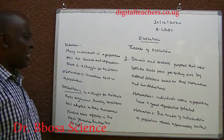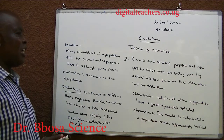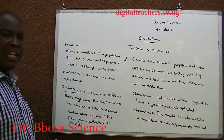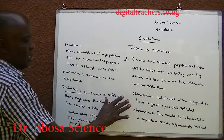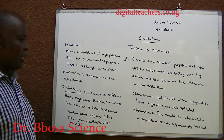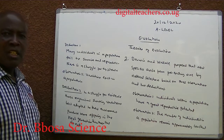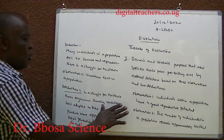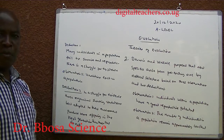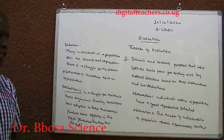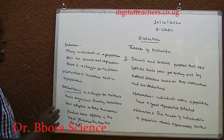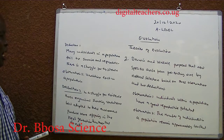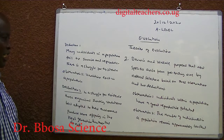Two, Darwin and Wallace proposed that new species arise from pre-existing ones by natural selection, based on three observations and two deductions. Observation one: individuals within a population have great reproduction potential — they may produce up to six million offspring. Observation two: the number of individuals in a population remains approximately constant. From these two observations, many individuals fail to survive and reproduce; therefore, there is a struggle for existence.